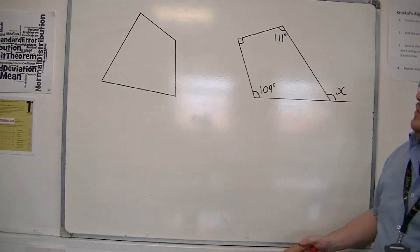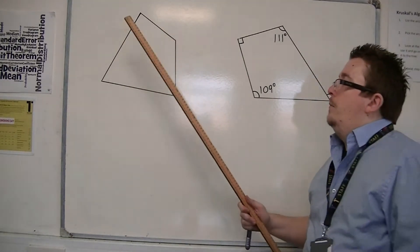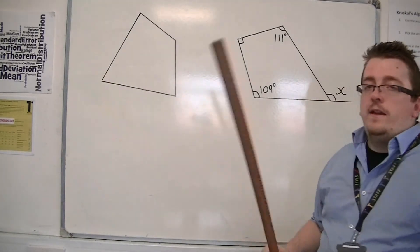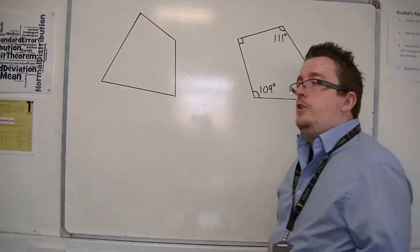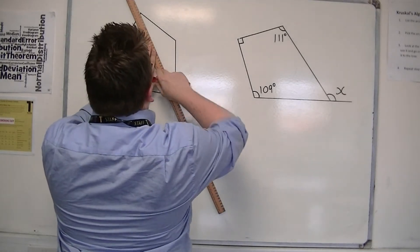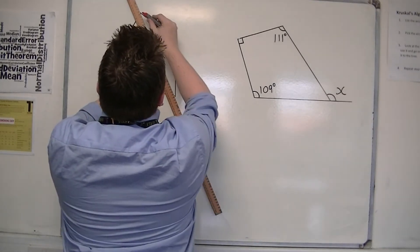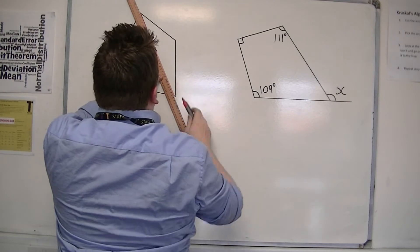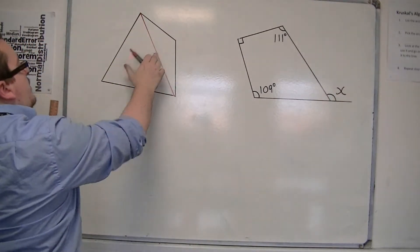For a quadrilateral like this, we can split this up into two triangles. We can split it up like this, just draw from one corner to another. And what happens is that we split it up into two triangles.